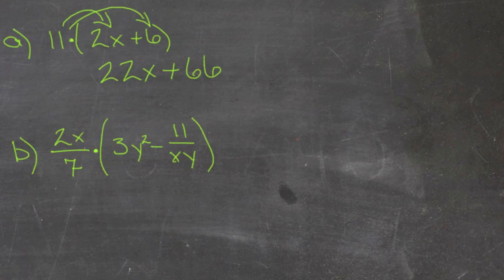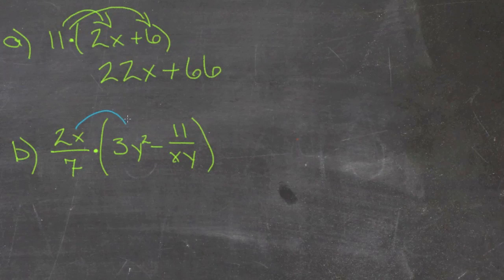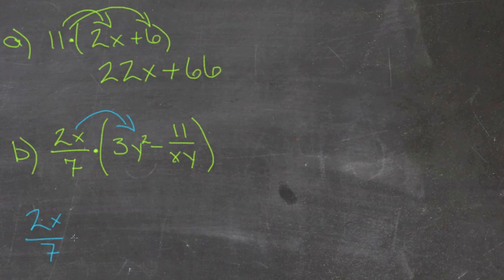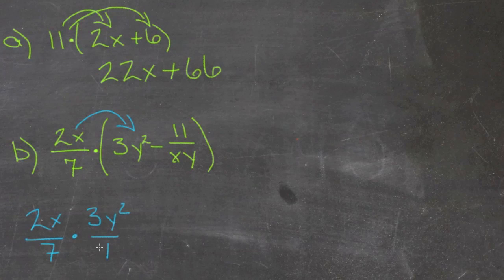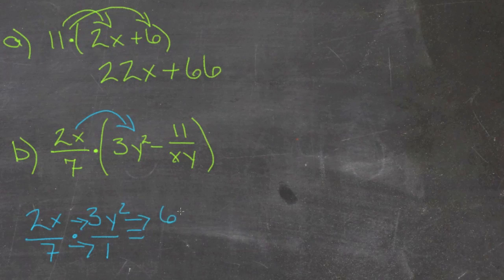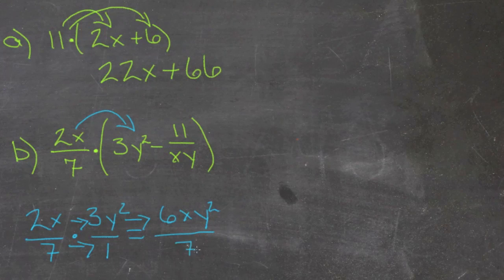Now the second problem is a little more complicated. I'm going to do it in two different colors. First we have 2x over 7 times 3y squared. We're going to distribute this. We get 2x over 7 times 3y squared over 1. Multiply straight across. That gives us 6xy squared over 7.